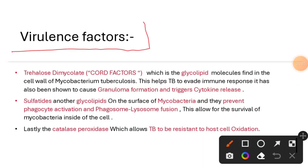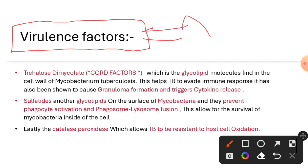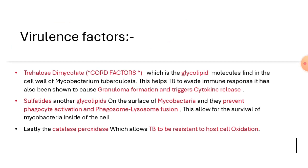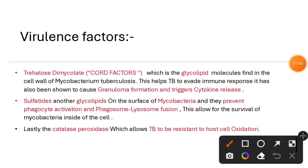Welcome back friends, welcome to another video tutorial from Microbiology with Shagri. In this video tutorial we will discuss about virulence factors. Before going to discuss about the virulence factors of Mycobacterium tuberculosis, it is necessary to understand what is the meaning of virulence factor. In simpler words, virulence factor is nothing but the weaponry of Mycobacterium tuberculosis — the weapon that Mycobacterium tuberculosis will use to evade our immune system and to cause infection in our body.